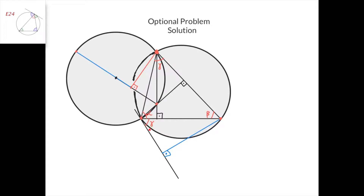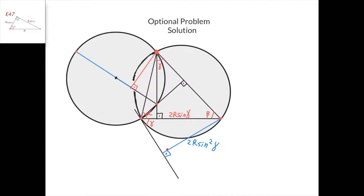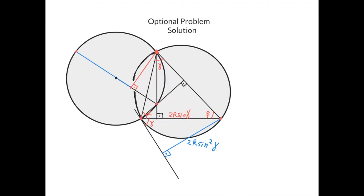we have that this angle equals this angle equals gamma, because they both correspond to this arc. From the law of sines, we know that the length of this side of the triangle is 2r sine gamma. And now from this right-angle triangle with this angle gamma, we find that this side is this side times sine of gamma, so 2r sine squared of gamma. And now we need to prove that the length of this blue segment is also 2r sine squared of gamma.